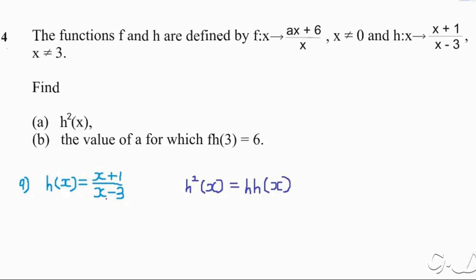So now we know that h²(x) = h(h(x)). What we do next is replace x inside h(x) with the function h(x) itself, which is (x + 1) over (x − 3). So we substitute x with (x + 1)/(x − 3) throughout.